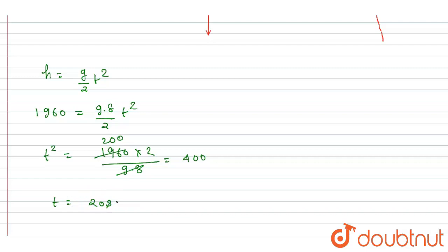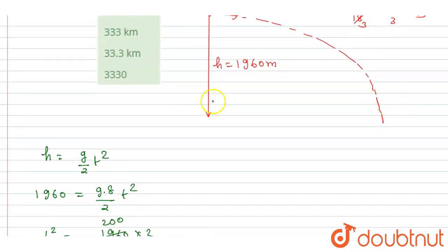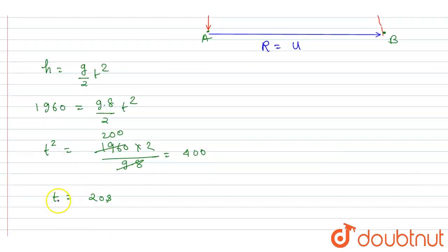So you got the time. Now if you see here, after getting the time we can get this AB distance. If you see, this point is A and this point is B, and we want the distance between them. So this is nothing but displacement in horizontal direction. The displacement in horizontal direction, let's say it is R, will be simply the time it takes to strike.